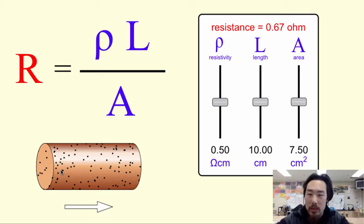So we have a PhET simulation here and we're going to take a look at how changing these variables affects the resistance of a resistor.